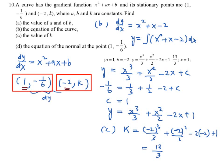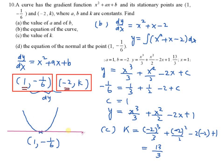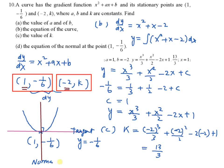Since this is a stationary point — let's say a minimum point — at (1, -1/6), dy/dx equals 0 there. The tangent at this point is a horizontal line, so its equation is y equal to negative 1 over 6. The normal is perpendicular to the tangent, making it a vertical line. Therefore, the equation of the normal is x equal to 1.